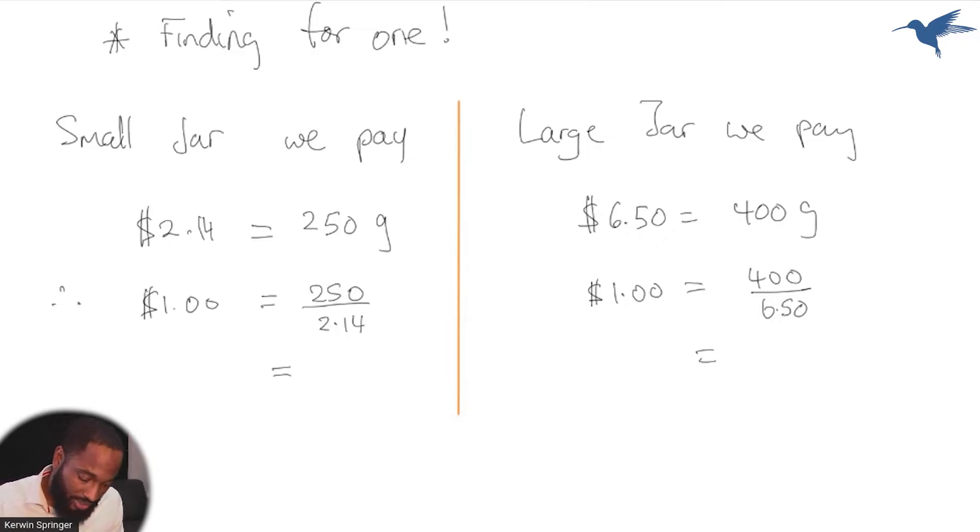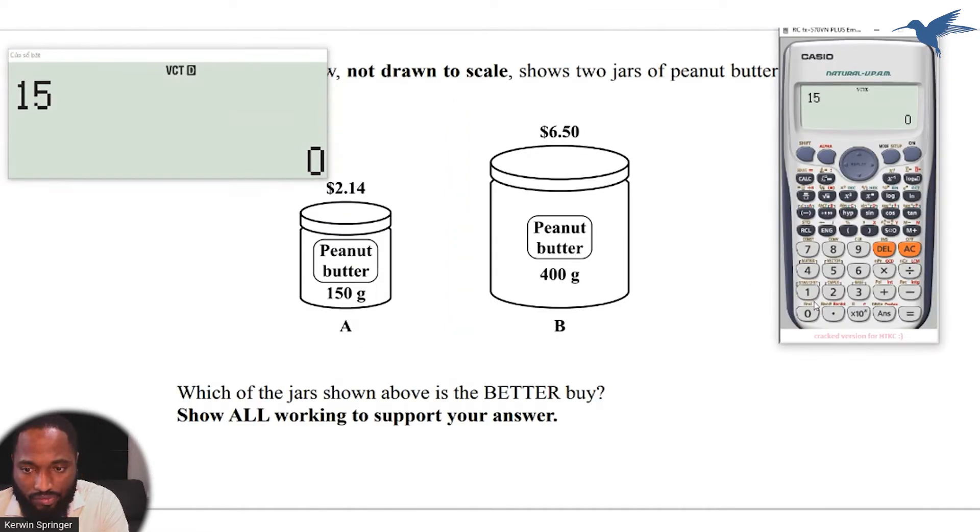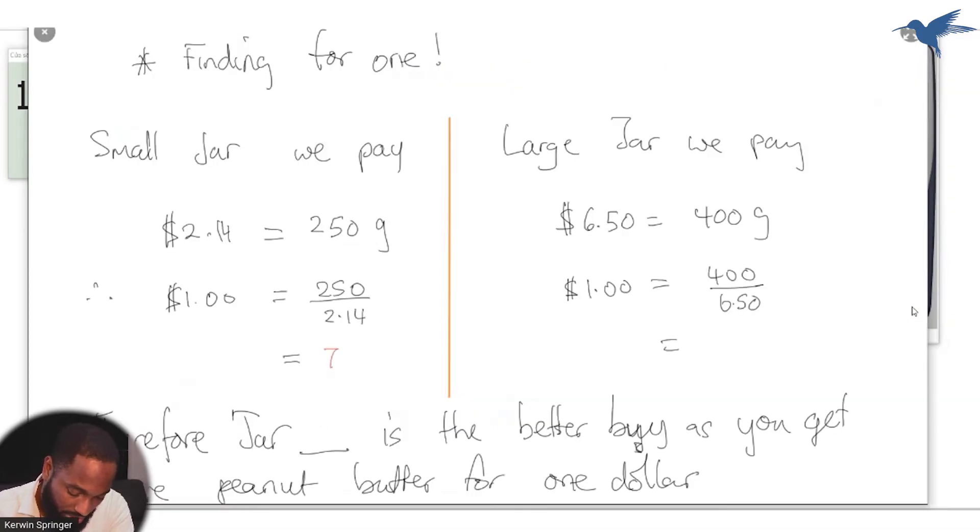In the end, I will say therefore jar something is the better buy as you get more peanut butter for one dollar. So I had initially 150 divided by 2.14, this is giving me 70.09. I'm writing it in the background here in red. 70.1 let's say, 70.1 grams.